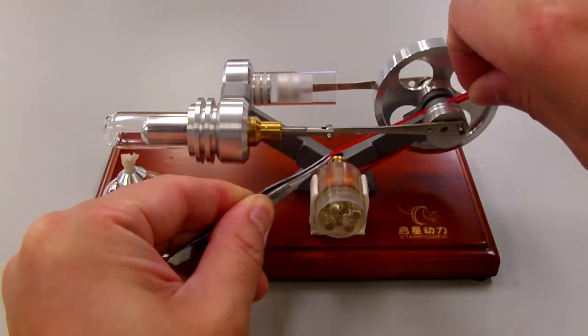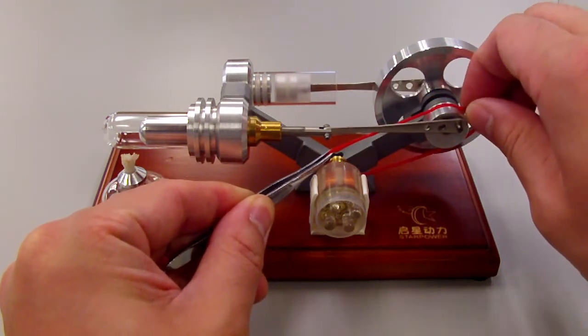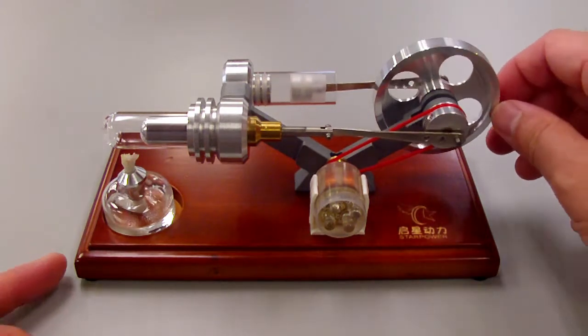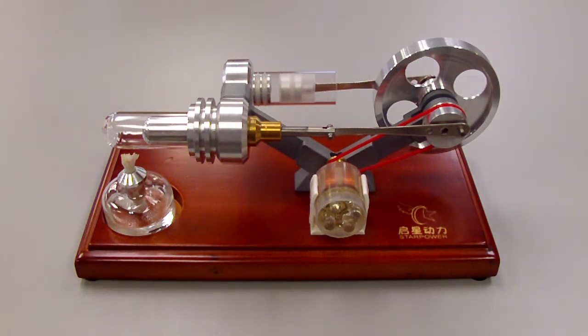And one way we can use that mechanical energy is to generate electrical energy. And this device is set up to do that. I just connected the axle with a small generator, which is hooked up to a LED light.